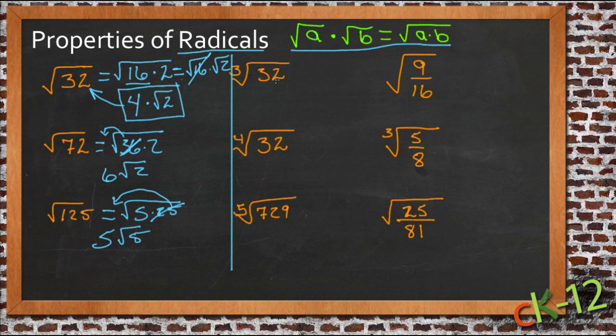But the cube root of 32 isn't going to be even. So if we try and figure out what that might be, well we know 2, 2 cubed is 8, so if we could break this apart so that there was an 8.